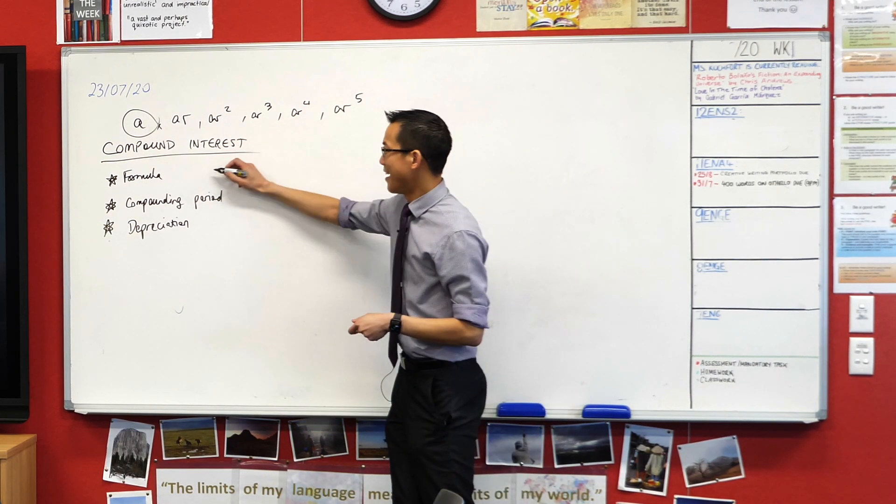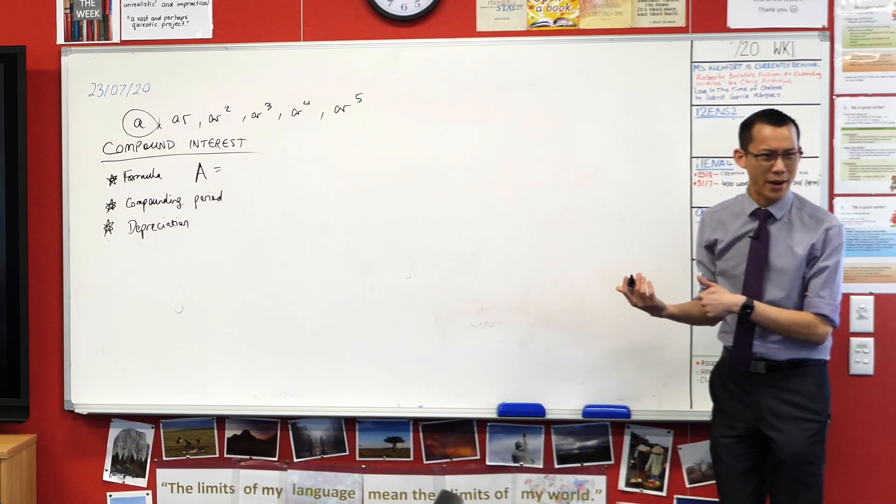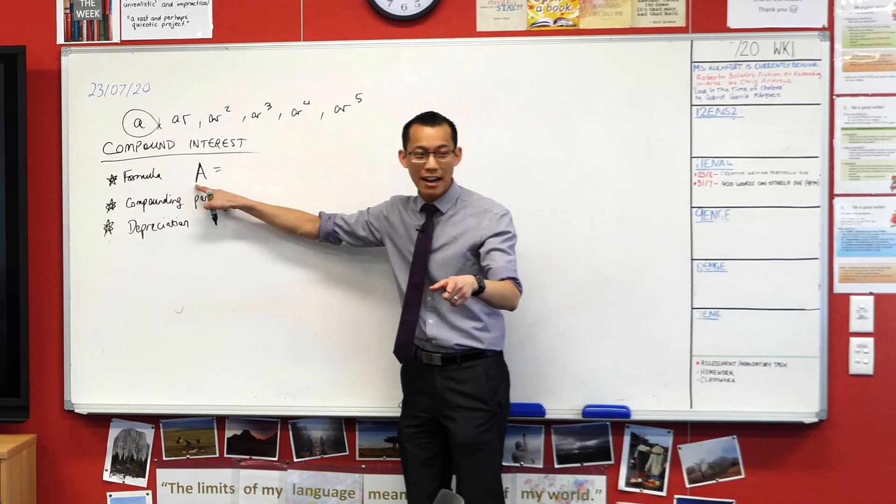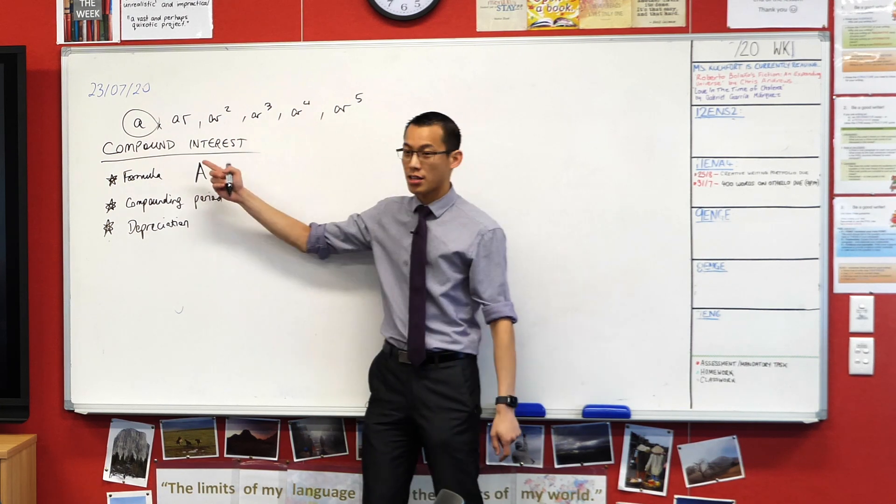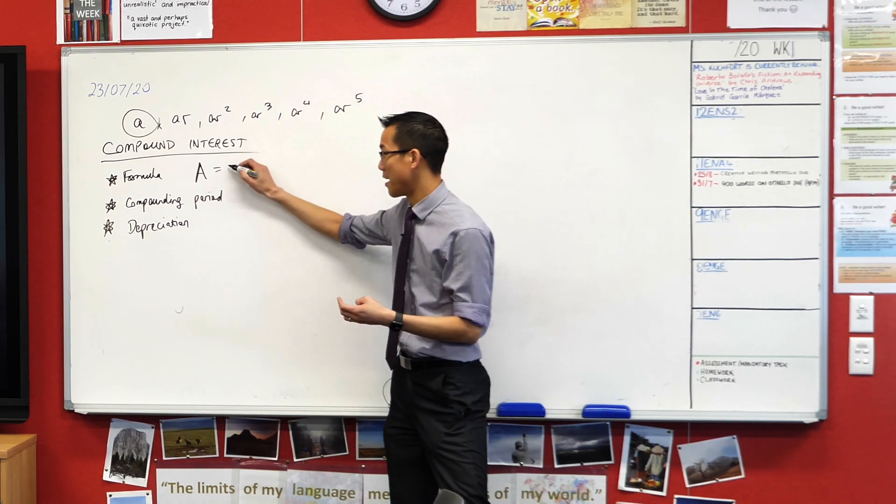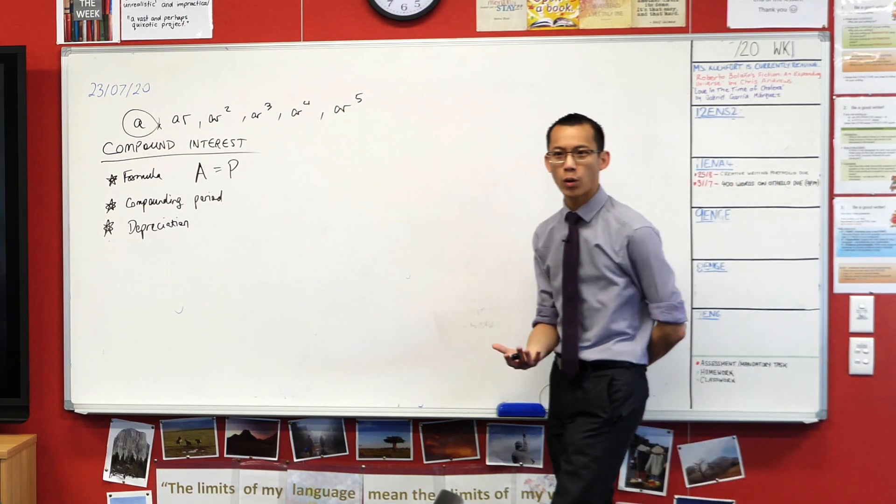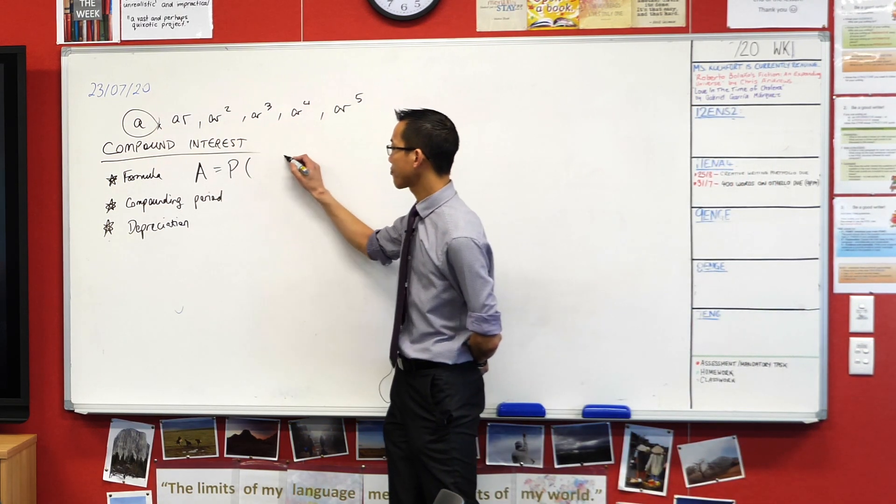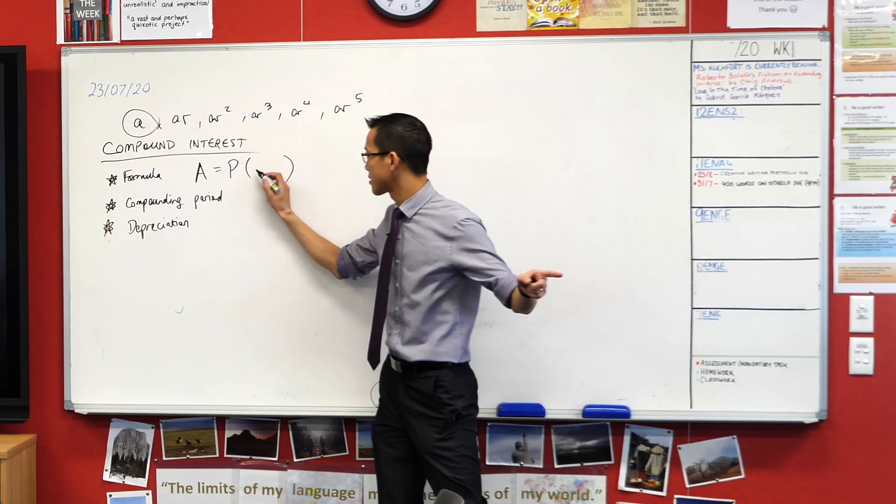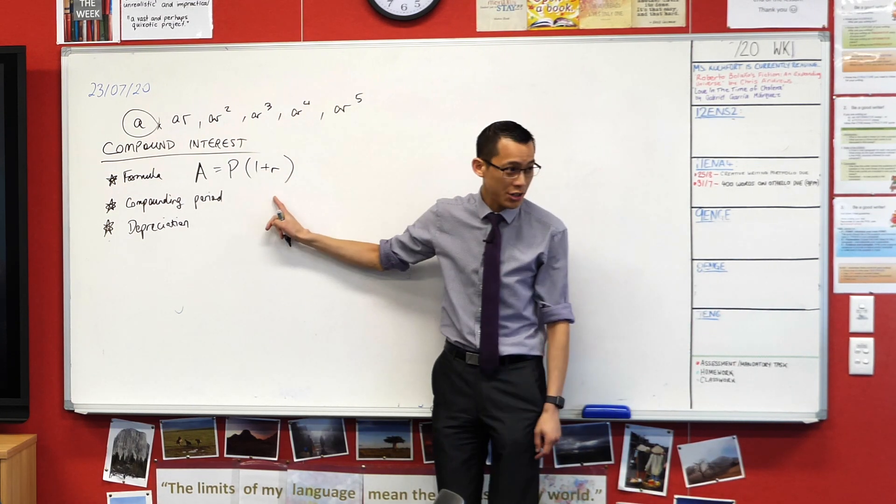Let's remember first, what is the formula for compound interest? It starts with an A, a capital A. What's it stand for? Amount - the amount you end up with. You start with some quantity. What's the quantity that you start with called? Starts with a P. Principal. And then we multiply by 1 plus R.